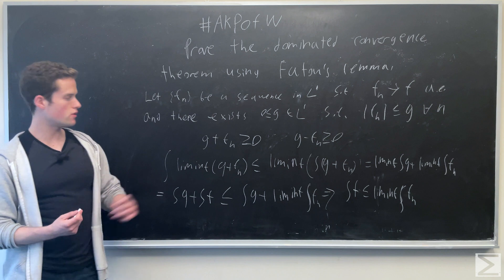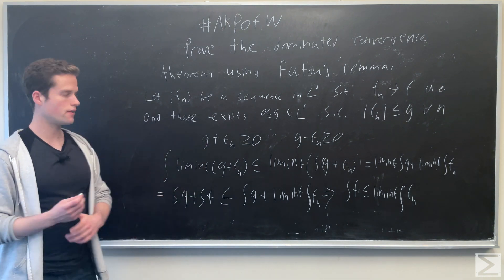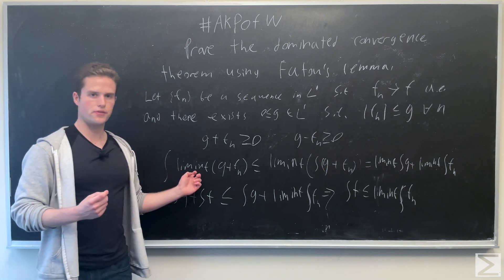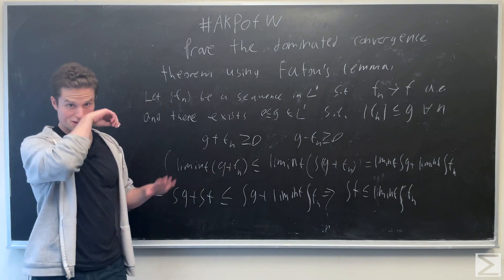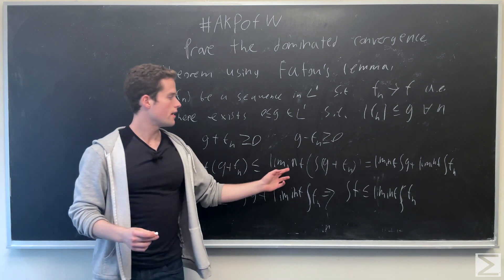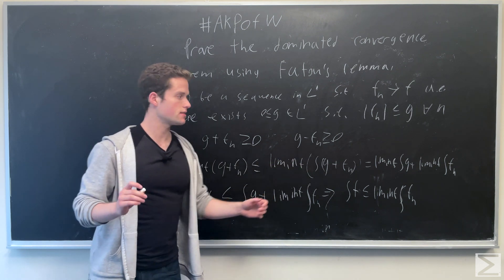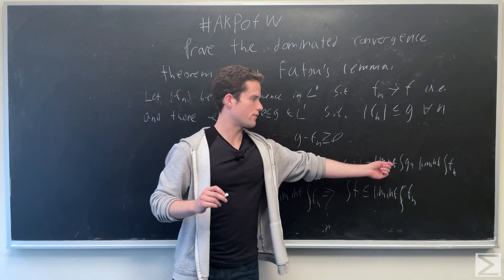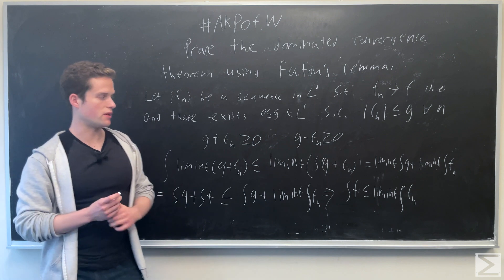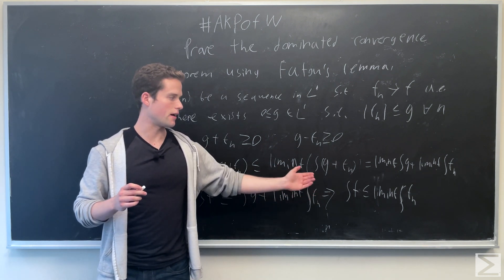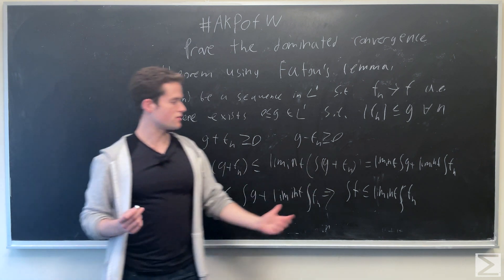First, applying Fatou's Lemma to g plus fn: we have the liminf of the integral is less than or equal to the integral of the liminf. When the liminf is inside, we can use the fact that fn converges pointwise to replace fn with f, and g stays as is. This gives us a connection between the integral of f and the liminf of the integral of fn, giving us one inequality.